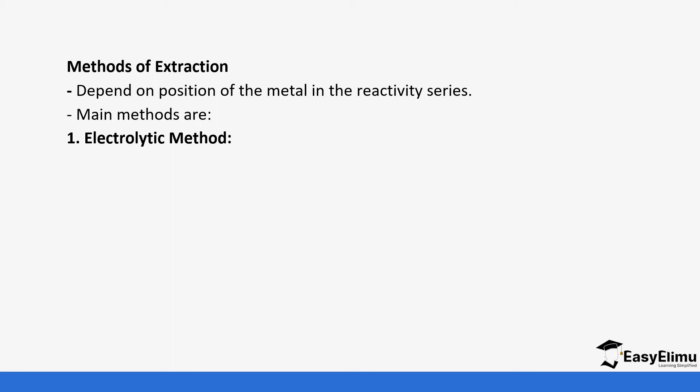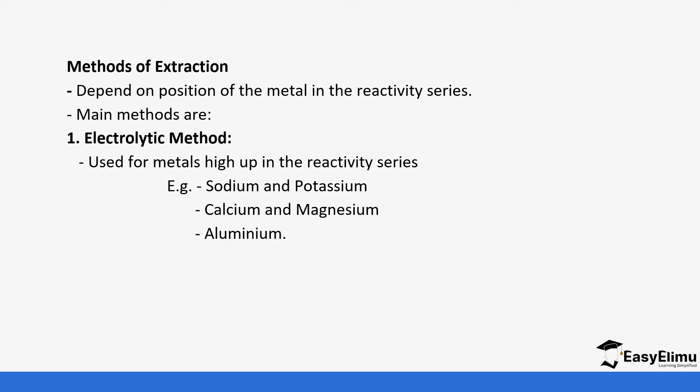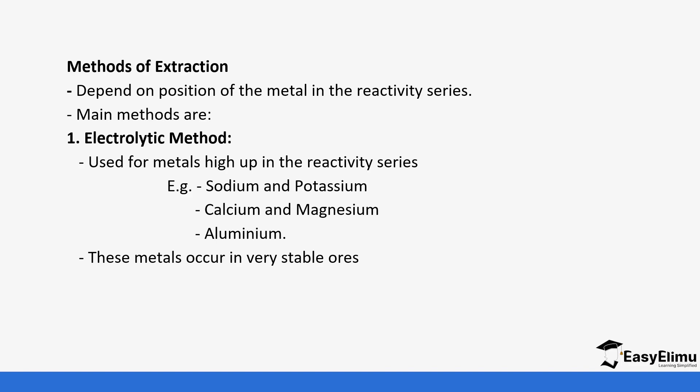When you look at where metals are on the reactivity series, you give them different ways of extracting them. The electrolytic method is used for metals high up in the reactivity series like sodium, potassium, calcium, magnesium, and aluminum. In this topic we will look at sodium and aluminum. These metals usually occur in very stable ores and you cannot reduce them because they are very high in the reactivity series.